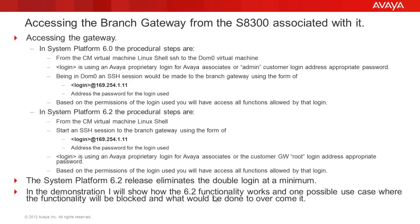What is listed on the upper half of this page are two sets of procedures that relate to System Platform Release 6.0 and the 6.2 release. The key piece to notice is the 6.0 procedure requires a double login and adds a significant amount of time to the maintenance process. System Platform 6.2 is a one-step process assuming that IP forwarding is enabled in the DOM0 virtual machine. I will demonstrate what the process looks like with IP forwarding enabled and disabled, and you will see how to enable IP forwarding so the functionality will work after it is enabled.